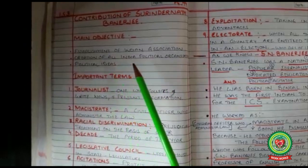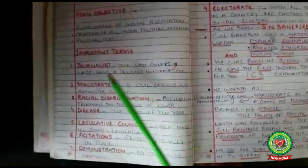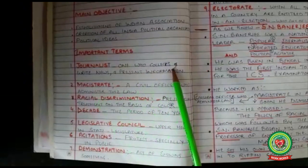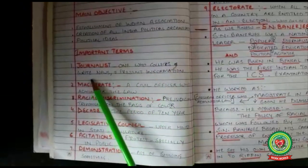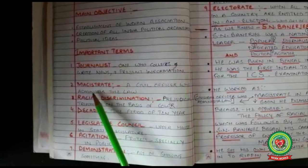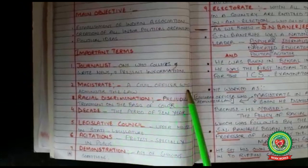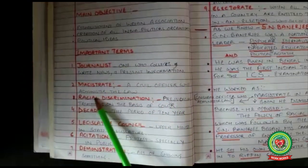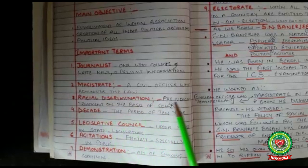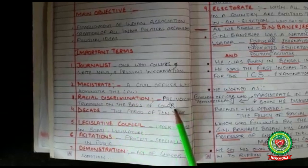Before the discussion of the topic, we must know the following terms. Journalist: one who collects, writes news, and presents information. Magistrate: a civil officer who administers the law. Racial discrimination: prejudicial treatment on the basis of colour.